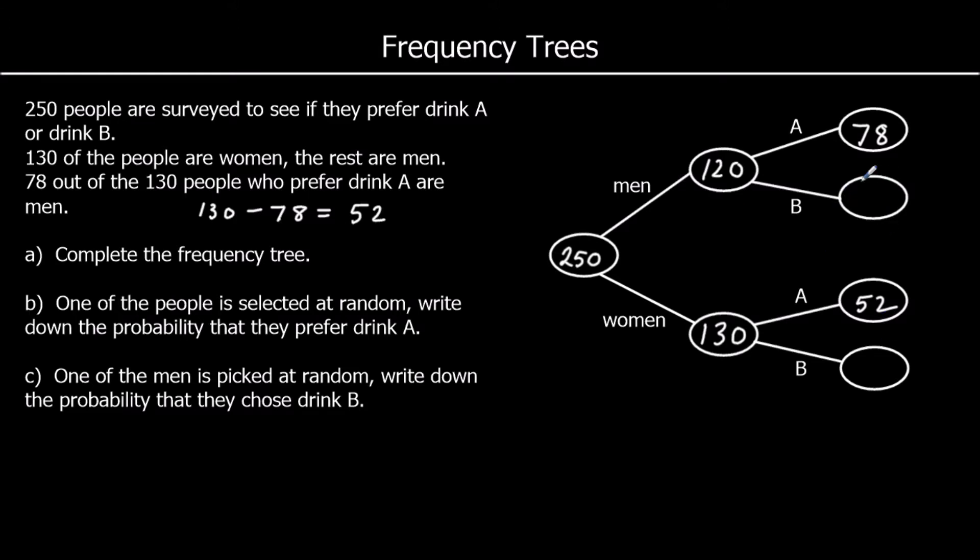So 52 women prefer Drink A. So let's find these missing ones. So there must be 120 men. We've got 78. How many more do we need? We need 22 to make it to 100, we need another 20, so 42. And how many women are missing? So 48 more to get to 100, plus 30, so 78. So that's the Frequency Trees completed.